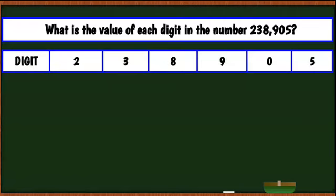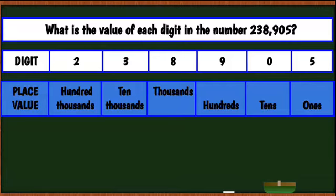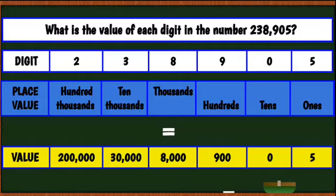Let's review. We have our number, our digits, and the place values of each digit. So five would be 5, zero tens would be 0, nine is nine hundreds, eight's value is 8,000, three's value is 30,000, and two's value is 200,000. The values correspond to their places in the place value chart.